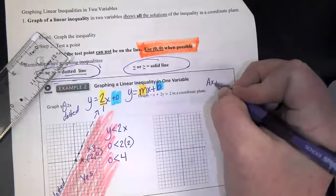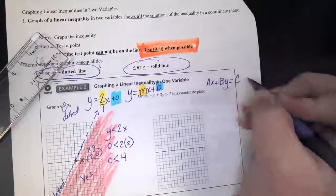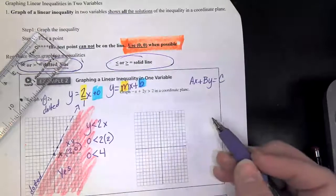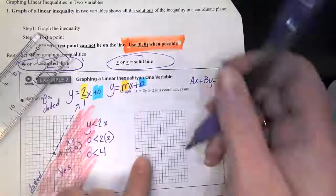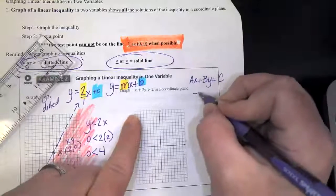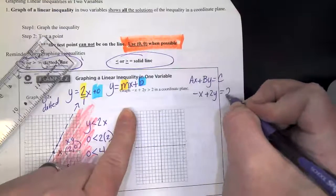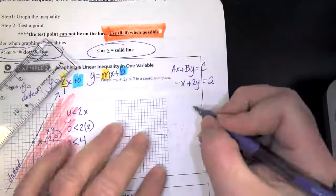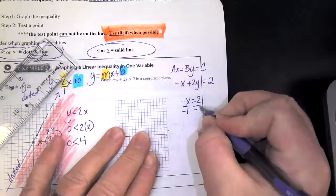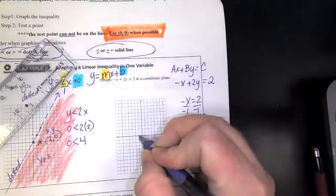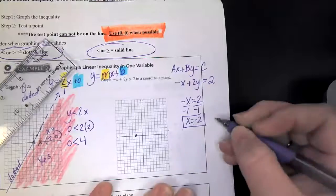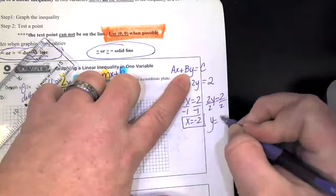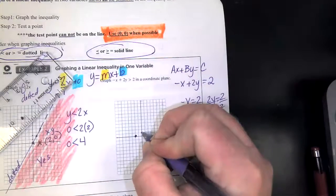You know what? Why don't we test this point right here? What's that point? Two, zero. So I'm going to put an x here and I'm going to write two, zero. So here's my x and here's my y. Now you're going to do the same thing we did on the front. So here's my equation. I'm going to plug a zero in for y and a two in for x. Is zero less than four?